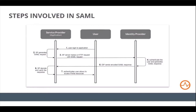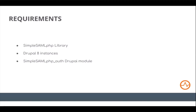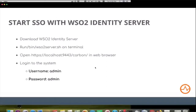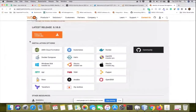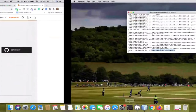Now I'll do a small practical session. Before that, the requirements are: a SimpleSAMLphp library, two Drupal instances, and the SimpleSAMLphp Drupal module. You can download WSO2 Identity Server from WSO2.com. I have already started the server — you go to the bin folder inside the WSO2 Identity Server 5.9.0 directory and run the WSO2 shell file; it takes about 40 seconds to one minute to start.